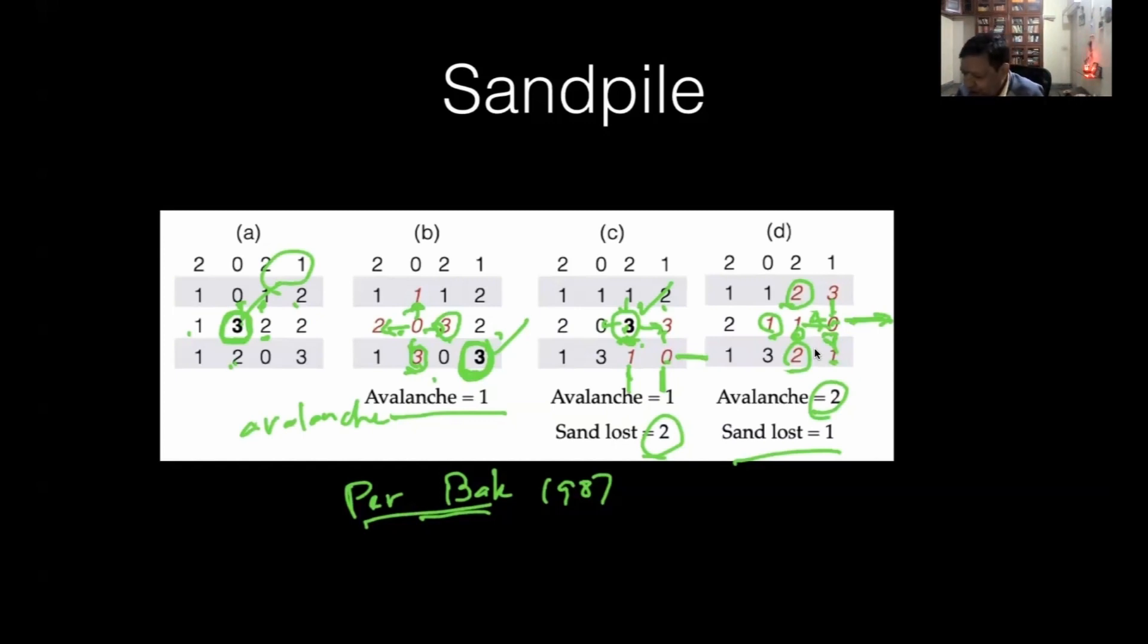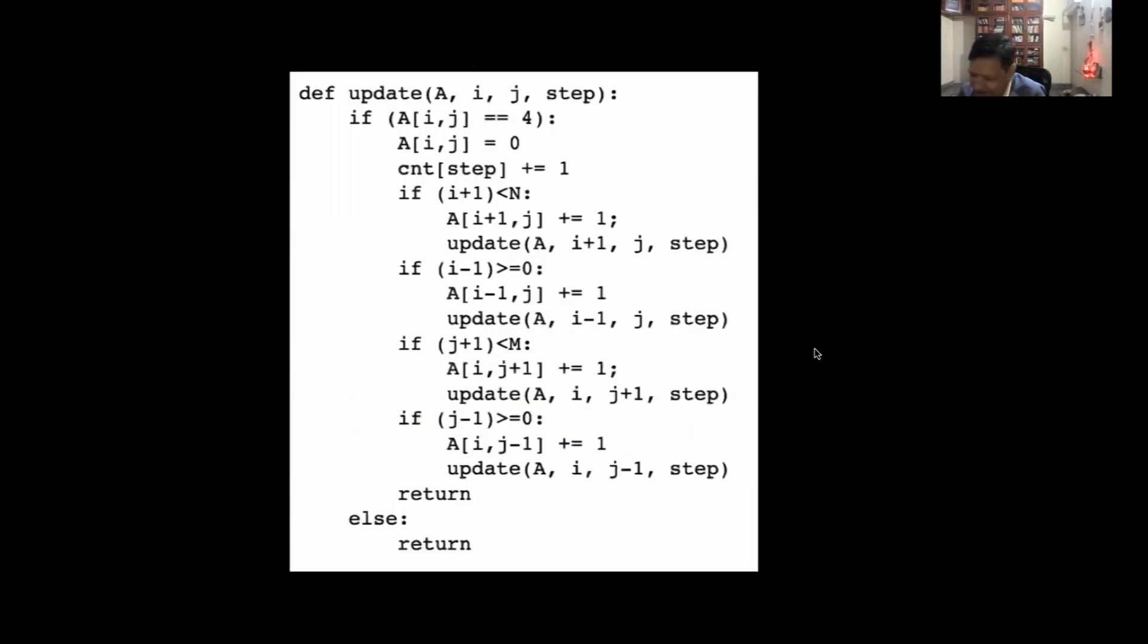The idea is to run it for a long time and count the number of avalanches. This uses recursion, which is a very good thing to do. Due to lack of time, I won't dig deep into this algorithm, but it's called the update algorithm. This array A[i,j] is where I drop the sand, and the number of steps is kept.